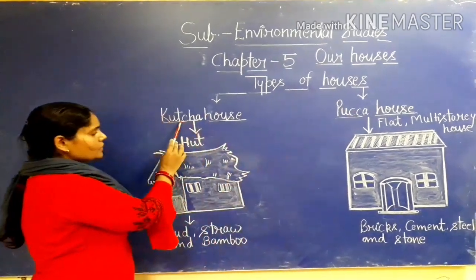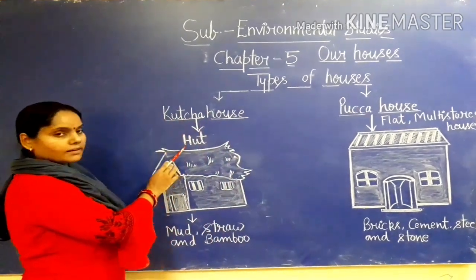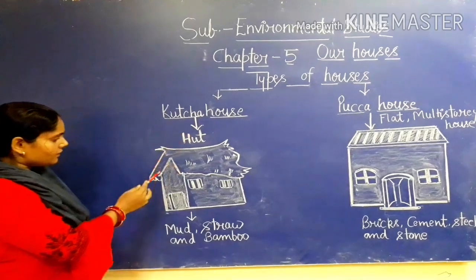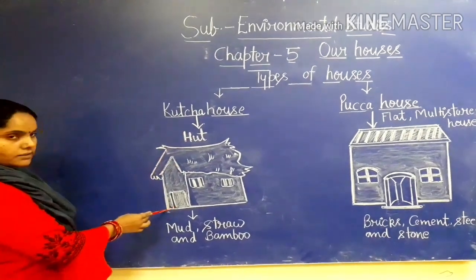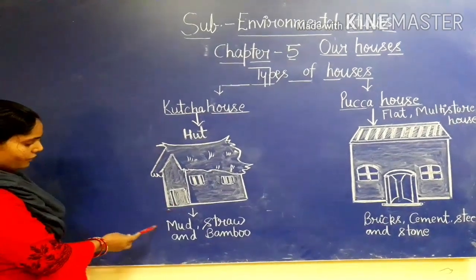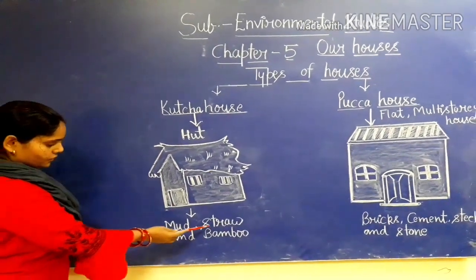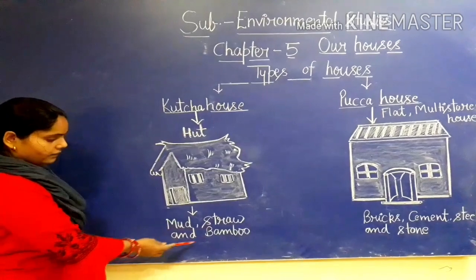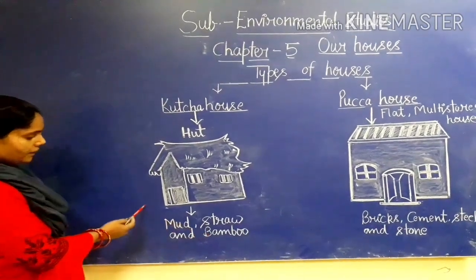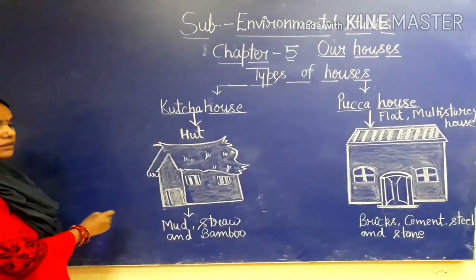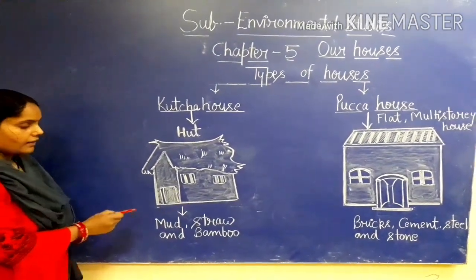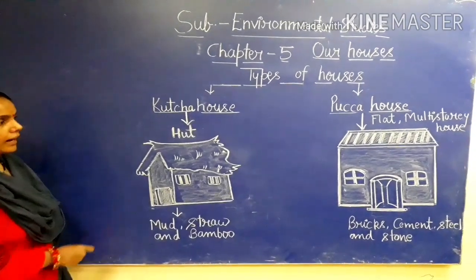Kaccha House is like a hut. You can see the picture of a hut. A hut is made of mud, straw, and bamboo. They are mainly found in villages and they are not very strong.